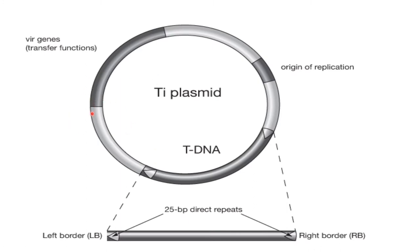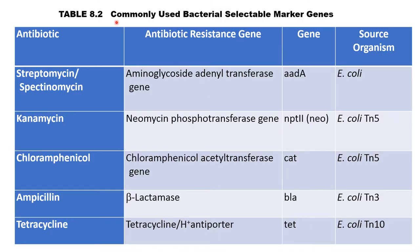Commonly used bacterial selectable marker genes include antibiotic resistance genes. Streptomycin or spectinomycin resistance gene is aminoglycoside adenyl transferase, represented as aadA, sourced from E. coli. Kanamycin resistance gene is neomycin phosphotransferase, represented as nptII or neo, sourced from E. coli Tn5.